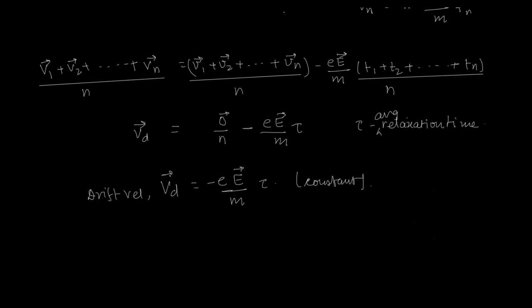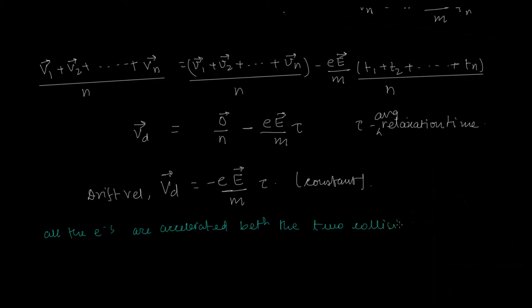Now this is an accelerated motion — all the electrons are accelerating between the two collisions — but still their net drift velocity is a constant. This looks like a paradox but it is not. Their average drift velocity is a constant. This looks paradoxical but it is not, and I'll show you how.